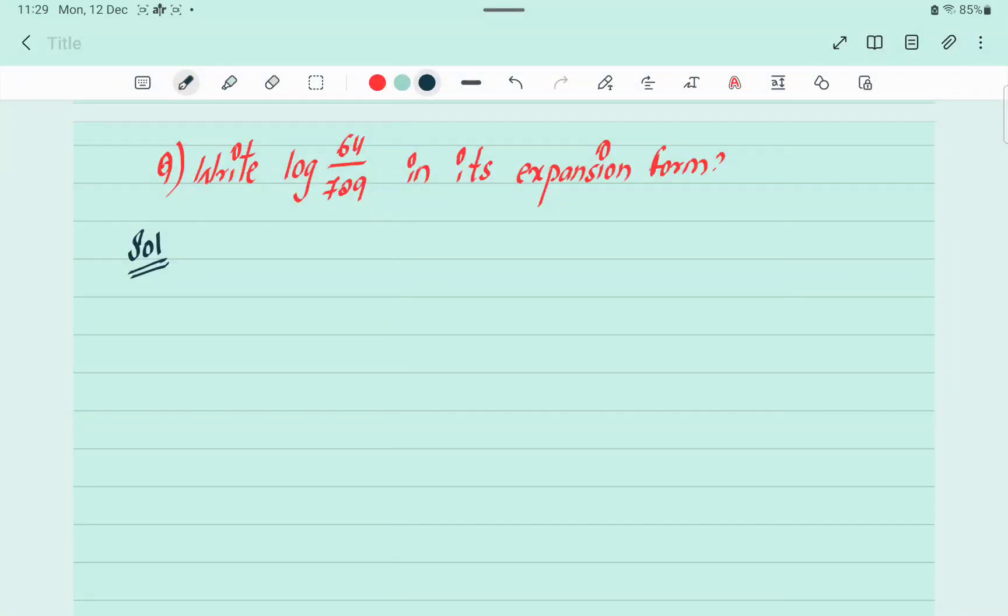Student, let's come to our next question. Write log 64 by 729 in its expansion form. So first, write the given.